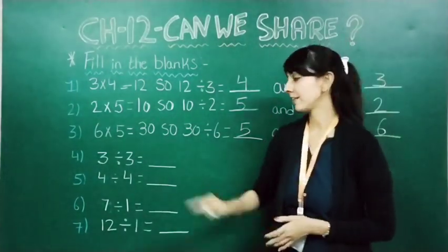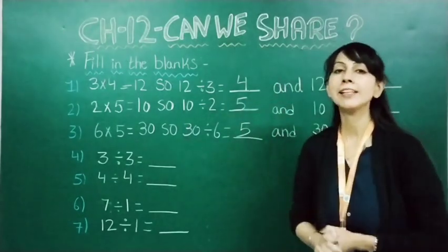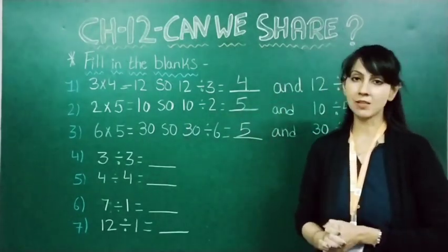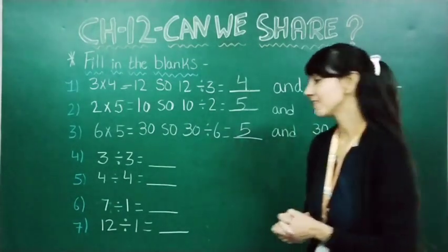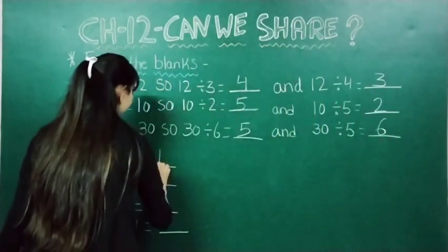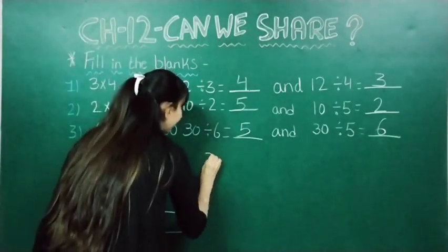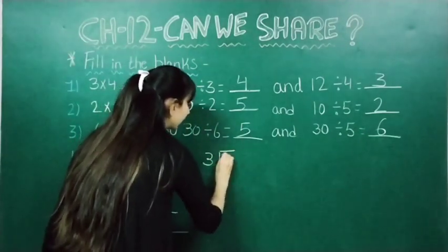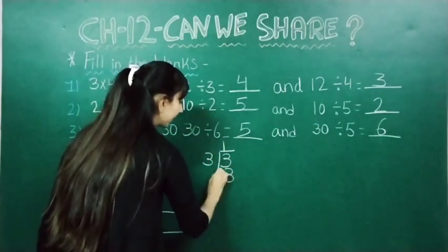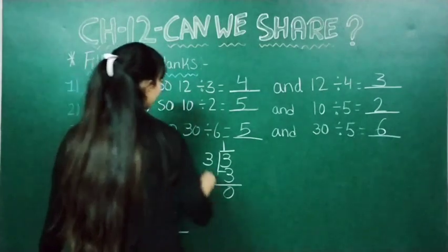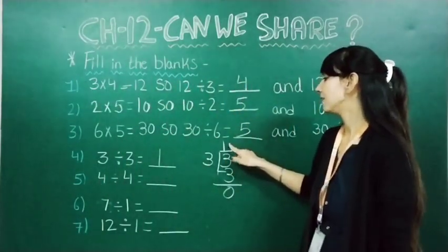Let us see the next one. Three divided by three. In division, when any number is divided by itself, then what do you get? You get one. So here it will come one. Why one? Three divided by three — three ones are three. So the answer we obtained is one.